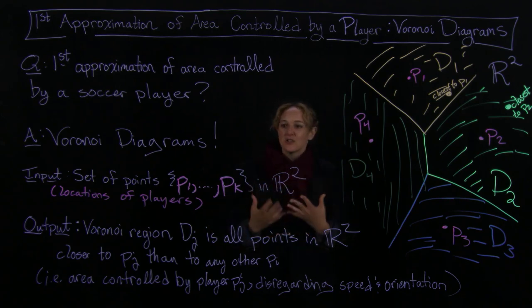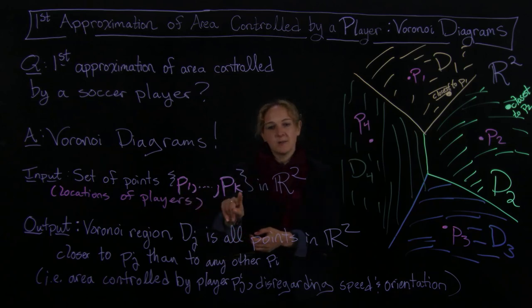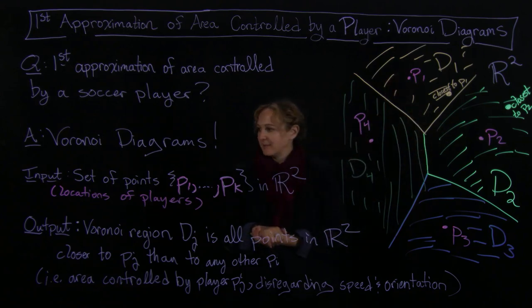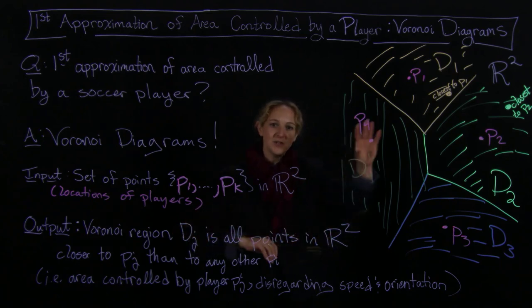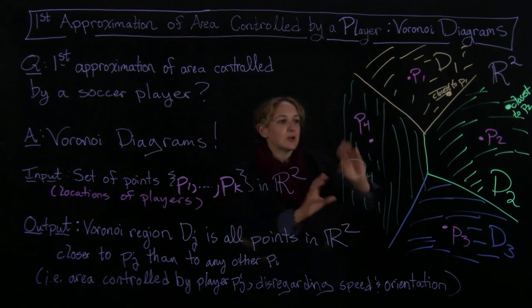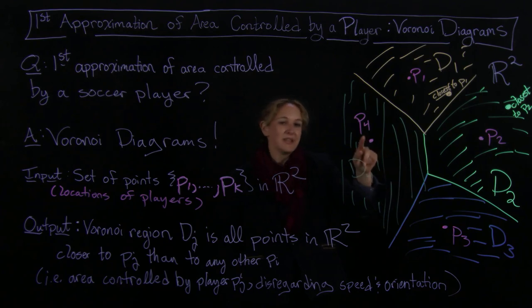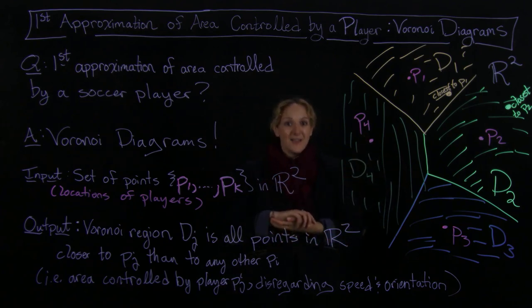So what's going on here is a very first, fundamental notion for approximating the area controlled by players. We start out with a list of players, represent them by P1 up to PK — that's just how many players there are, some hidden in the dots — and you can see them as points in the Euclidean plane. We get a Voronoi region for each player, and that's the region of all points closer to that player than anywhere else. You can think of it as: if that was the ball, this player's going to get there first. I hope that made some sense, and I will see you in the next lecture.